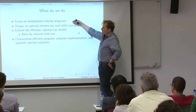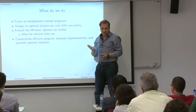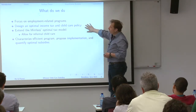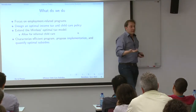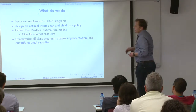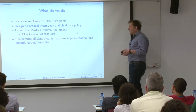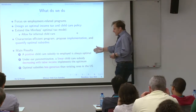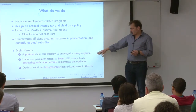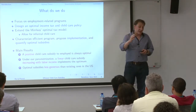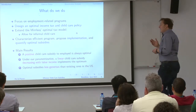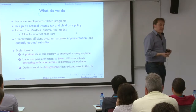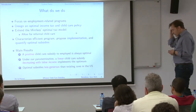We focus on employment-related programs, not focusing on quality, which is a very important but complicated issue. The approach is to extend the standard optimal tax model by allowing informal childcare activity — a very simple extension. We study the efficient allocation, propose an implementation, and do some quantitative analysis. The results are: first, there is a basic point for positive childcare subsidies; second, there is a very simple linear childcare subsidy scheme implementation.